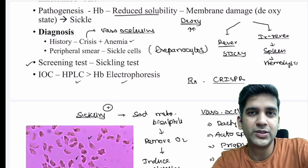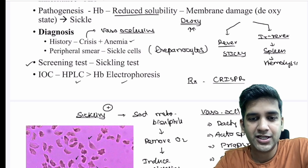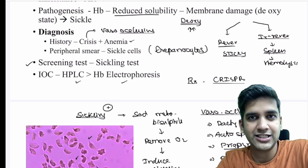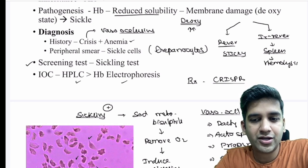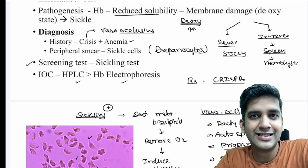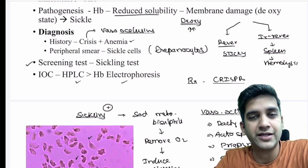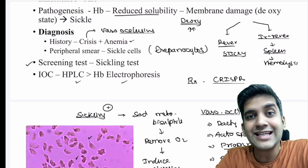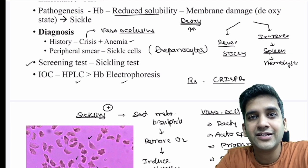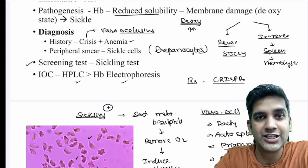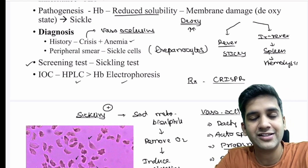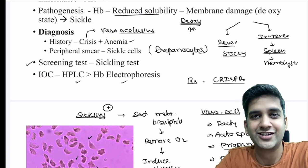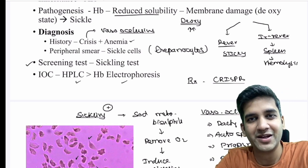I'll stop with one question for you to answer: the 'hair on end' X-ray appearance in the skull — can it be seen in sickle cell anemia? Yes or no? Comment in the section below and we'll look at that in the next class. See you soon, bye-bye.